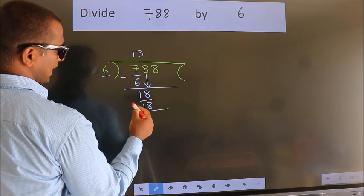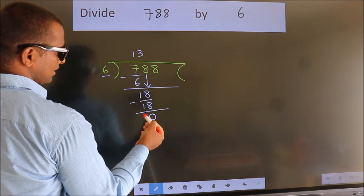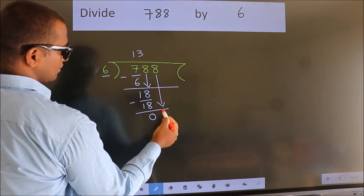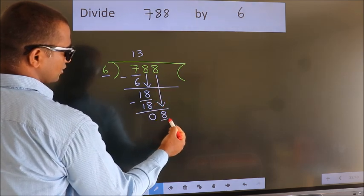Now we subtract. We get 0. After this, bring down the next number. So 8 down. So 8.